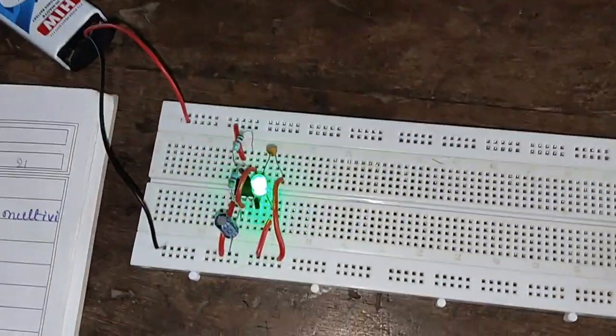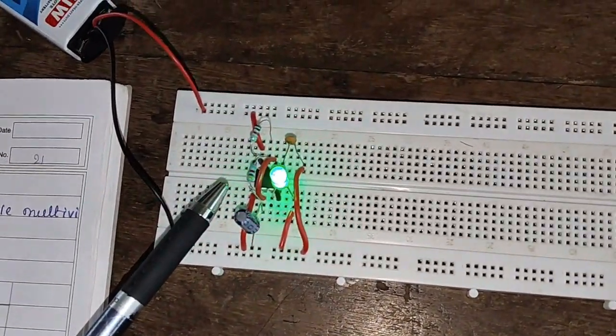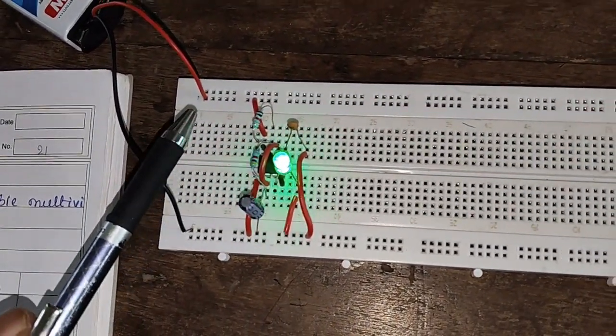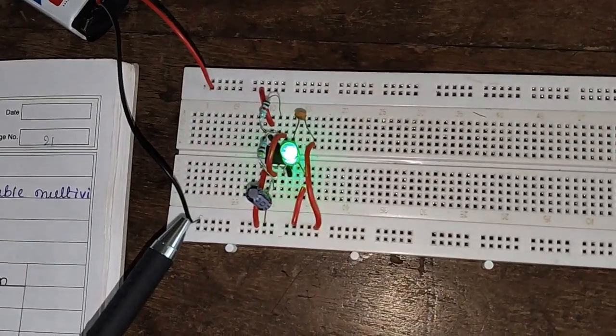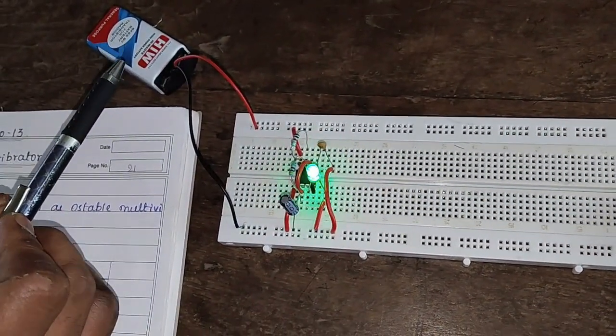Here on the breadboard, we can see that 555 timer IC is connected. Here at pin number 4 and 8, instead of regulated power supply, we have connected 9V battery. This is for the sake of convenience.